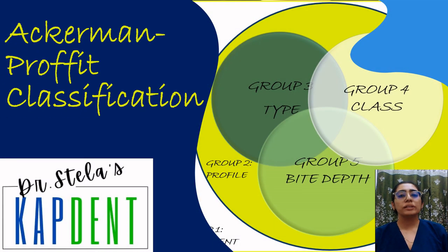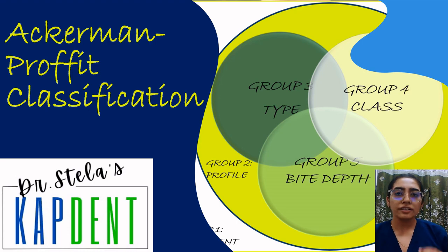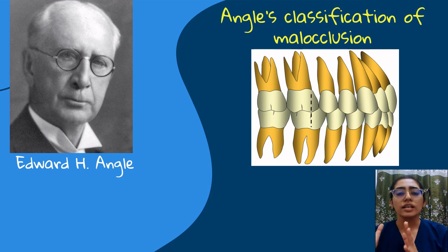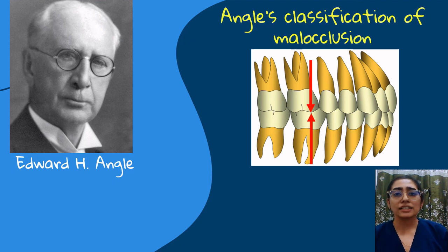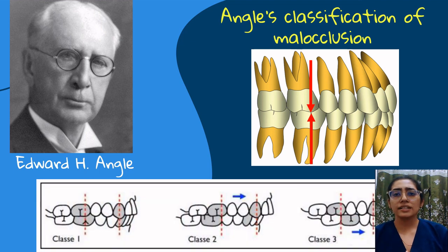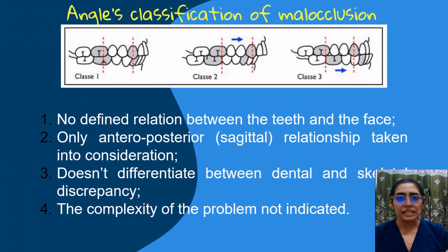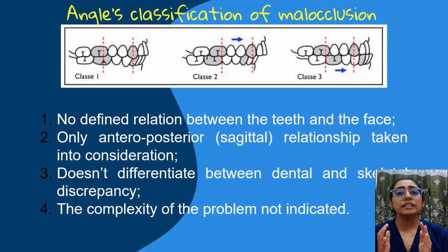Hello everyone. In today's video we will be learning and discussing the Ackerman-Proffitt classification of malocclusion. We are aware that Edward H. Angle contributed a widely used classification of malocclusion which describes the relation between the mesiobuccal cusp of the maxillary first molar and the buccal groove of the mandibular first molar, presenting three classes of malocclusion representing a discrepancy only in the anterior-posterior or sagittal dimension. The reason for its widespread use lies in its simplicity and the fact that it brought order to the previous chaos that existed in describing dental relationships.